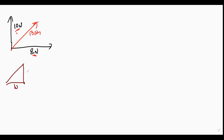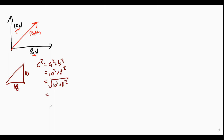We call that 10, we call that 8. We say we're looking for c squared: a squared plus b squared equals 10 squared plus 8 squared equals the square root of 164, which is 12.8. So there we go - was that 13-ish? Yes it was.